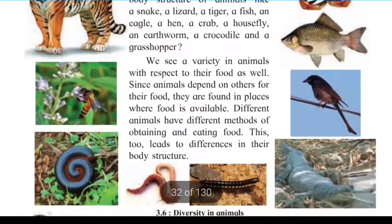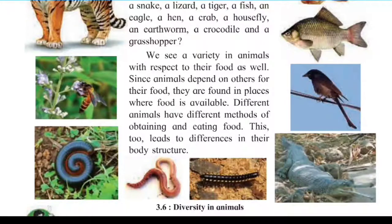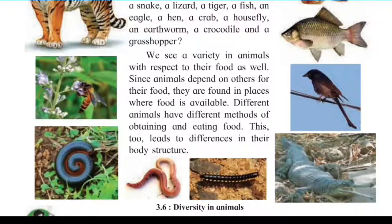We see a variety in animals with respect to their food as well. Since animals depend on others for their food, they are found in places where food is available. Different animals have different methods of obtaining and eating food, and these also lead to differences in their body structure.